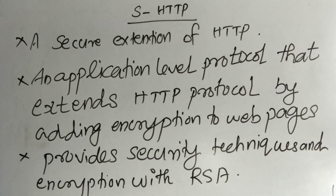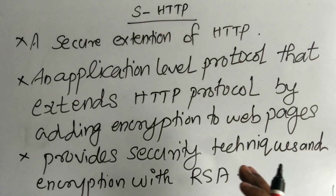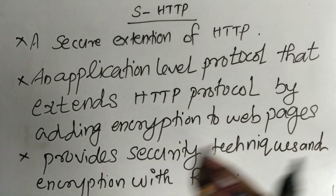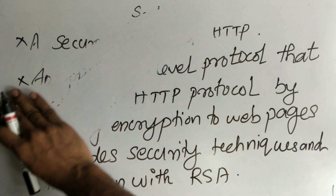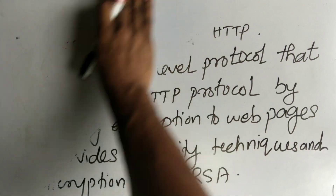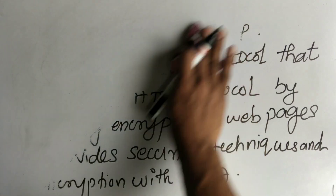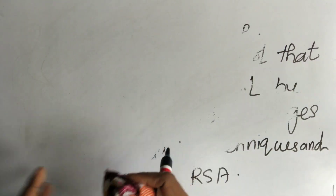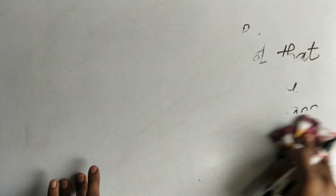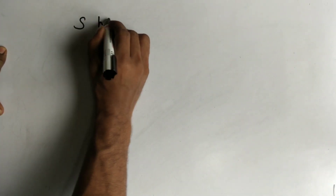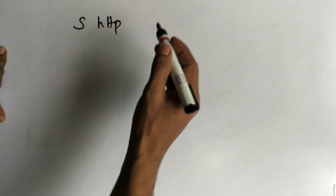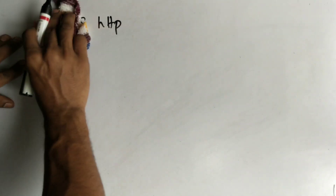So far we have discussed about SSL and SHDTP. Now we can discuss the critical difference between these two. SSL is a protocol which works in a lower layer, and SHDTP works in the application layer.